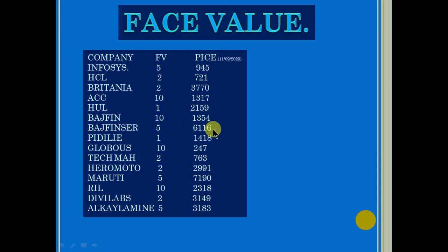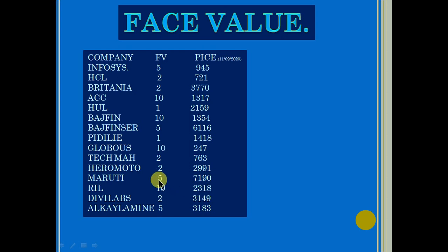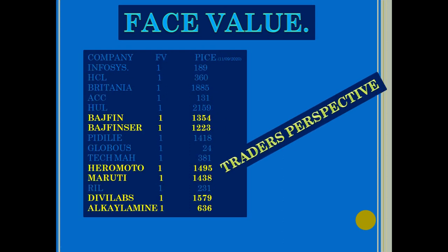Similarly, Bajaj Finserv shows 1354 and Bajaj Finance 6116. What I have done here is converted all these prices for the purpose of understanding to a face value of 1. For example, Reliance's closing on 11th September was 2318, so I divided it by 10 and made it 231. For Bajaj Finserv, which had a face value of 2, I converted it accordingly. Note that the correct price of Bajaj Finserv is actually 3154, not 1354 — I have corrected all these prices.